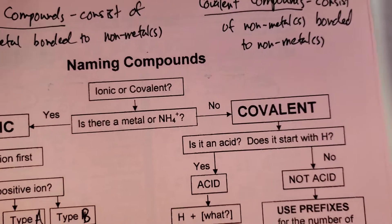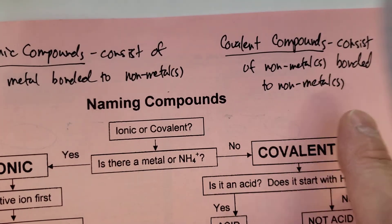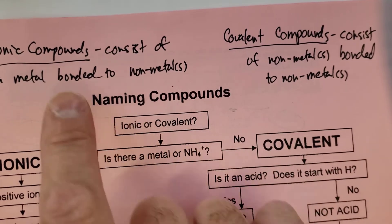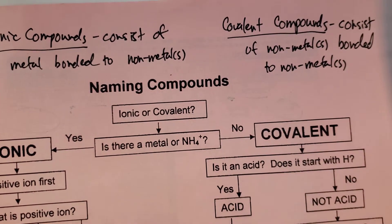Welcome back. We're going to take a look at covalent compounds. As mentioned earlier, they consist of nonmetals bonded to nonmetals. Last time we looked at ionic compounds in which we had metals and nonmetals. Now we'll simply look at nonmetals bonded with nonmetals.